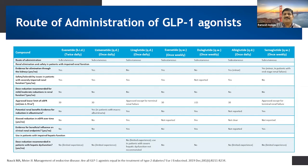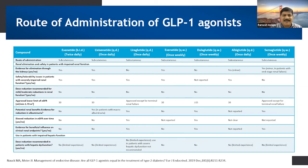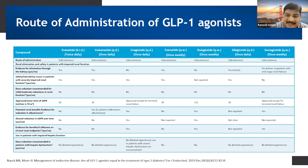Looking at the route of administration of GLP-1 agonists: exenatide is taken twice daily, lixisenatide once daily, liraglutide once daily, exenatide extended-release once weekly, dulaglutide once weekly, albiglutide once weekly, and semaglutide once weekly. The route of administration for all these medications is subcutaneous. These medications do not require any dosage adjustment, especially in the case of renal and hepatic challenges — that is the advantage of GLP-1 agonists.